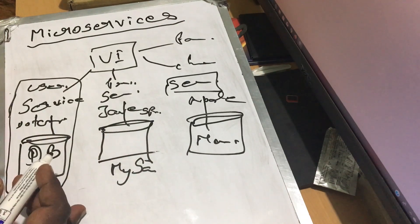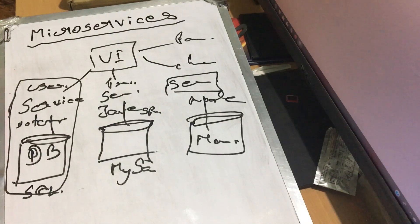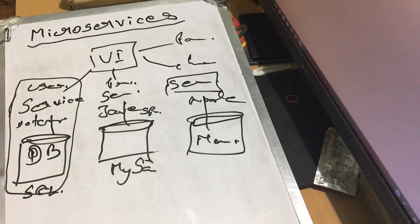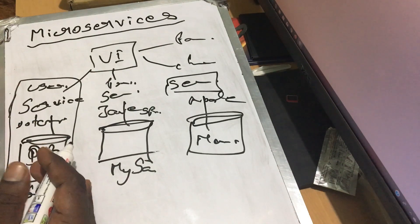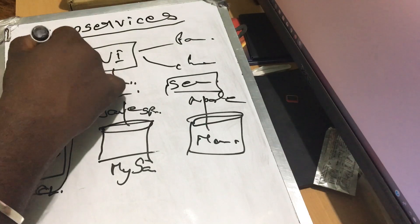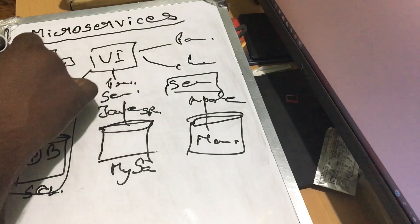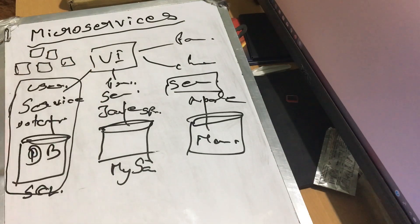If you change something in the user module, you only test the user module, so it is easier to grow. You can apply it to a container-based hosting. You can host it in .NET Core in a container, and if the user module needs to scale, you can deploy just that module.